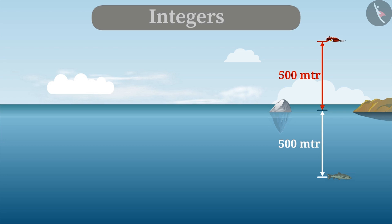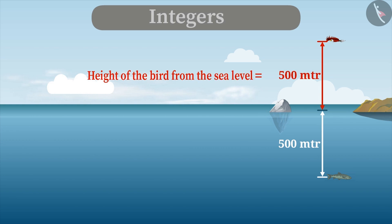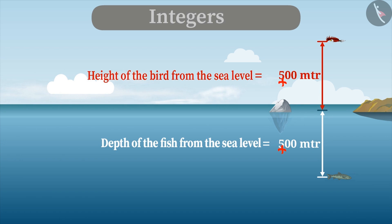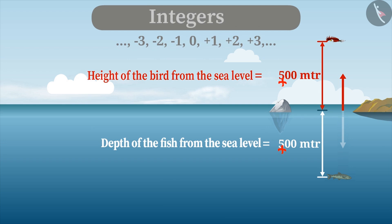Can the distance between the bird and the fish with respect to the land near the sea be represented mathematically? The height of the bird from the sea level is 500 metres and the depth of the fish from the sea level is 500 metres, but this is an incorrect way to represent their differences because both are situated in opposite directions — the bird is above the sea level whereas the fish is below. Since whole numbers are incapable of representing this kind of situation, we use integers. The height above sea level is represented with a positive sign as plus 500 metres, and the depth below sea level is represented with a negative sign as minus 500 metres.